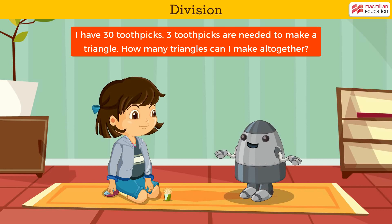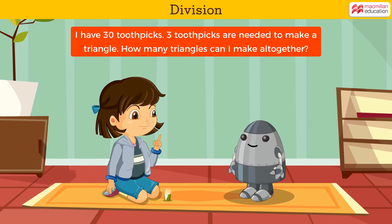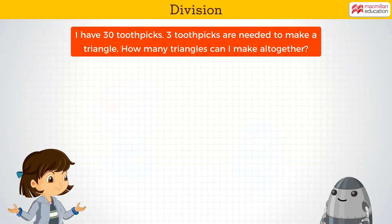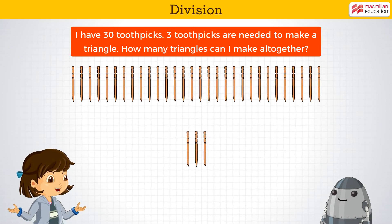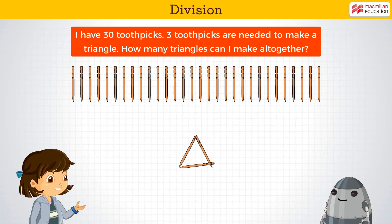Will you please show me how to solve it? Sure Robo, let's understand this problem using objects. I have 30 toothpicks. Three toothpicks are needed to make a triangle. Look how a triangle is formed.